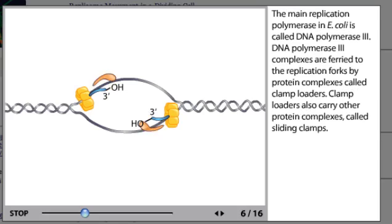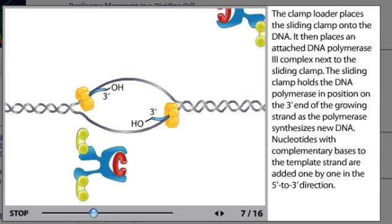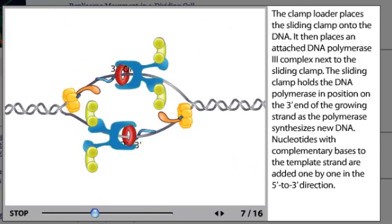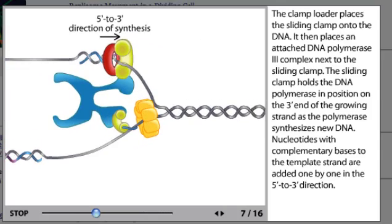The main replication polymerase in E. coli is called DNA polymerase 3. DNA polymerase 3 complexes are ferried to the replication forks by protein complexes called clamp loaders. Clamp loaders also carry other protein complexes called sliding clamps. The clamp loader places the sliding clamp onto the DNA, then places an attached DNA polymerase 3 complex next to the sliding clamp. The sliding clamp holds the DNA polymerase in position on the 3 prime end of the growing strand as the polymerase synthesizes new DNA.